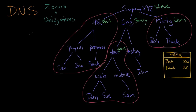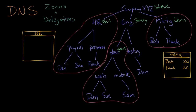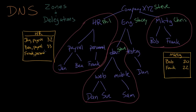Phil is going to do the same thing and create the HR phone directory. It's a little more complicated because we need to list the department each person works in. Jan, who's in payroll, is at extension 32. B also works in payroll, maybe at extension 33. Then Frank — a different Frank from marketing — works in personnel and is at extension 41.